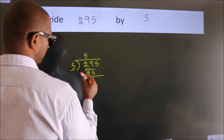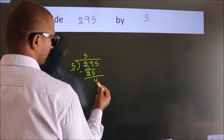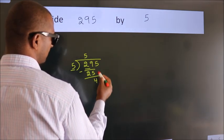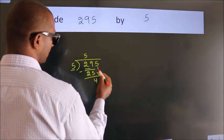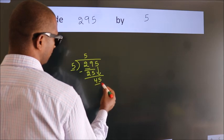Now we should subtract. We get 4. After this, bring down the beside number. So 5 down. So 45.